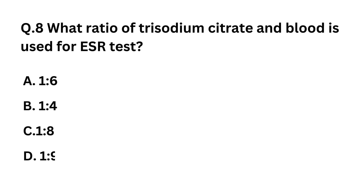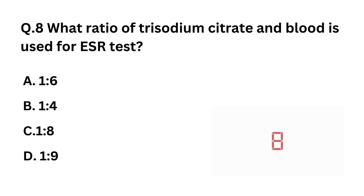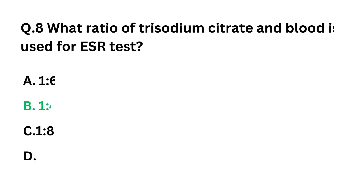Question 8: What ratio of trisodium citrate to blood is used for the ESR test? Option A: 1:6. Option B: 1:4. Option C: 1:8. Option D: 1:9. The correct answer is Option B: 1:4.